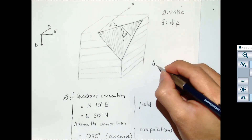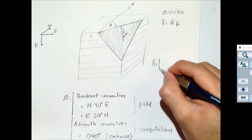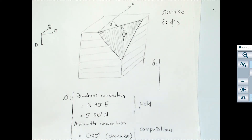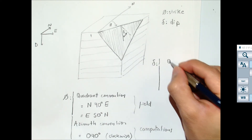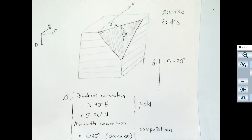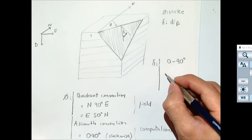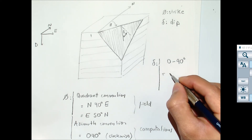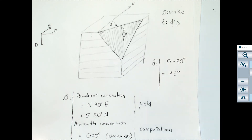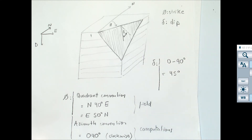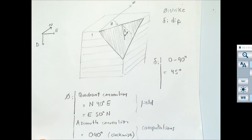The dip is a little bit easier — it just goes from 0 to 90 degrees. So for example, in this case the dip is equal to 45 degrees. That's what characterizes the dip.